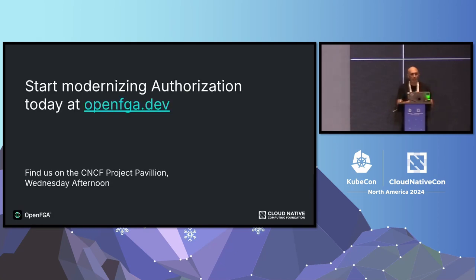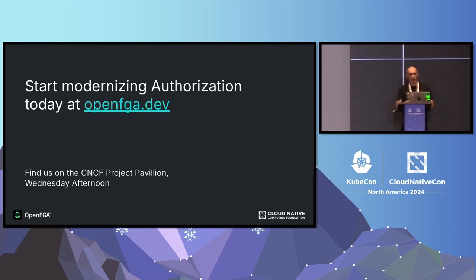This is OpenFGA. If you want to start modernizing authorization with OpenFGA, you can go to openfga.dev. If you have an open source project and you're thinking of implementing authorization or multi-tenancy, OpenFGA is a great solution — we have multiple open source projects using it. We're going to be in the CNCF pavilion on Wednesday afternoon. Thank you very much.